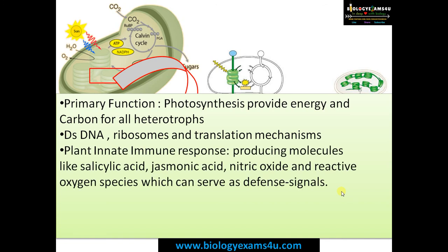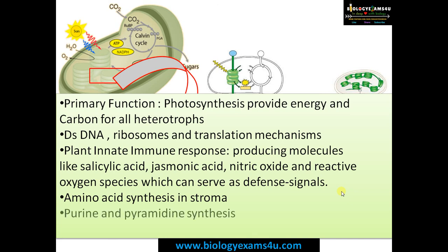Chloroplast is involved in the plant innate immune response. Chloroplasts produce molecules like salicylic acid and jasmonic acid, which serve as signals in stress conditions. It is involved in amino acid synthesis that takes place in the stroma — the majority of amino acids for plant cells are synthesized in the stroma. It is also involved in synthesis of purine and pyrimidine nitrogenous bases of DNA and RNA, and is a major site of fatty acid synthesis in plant cells.